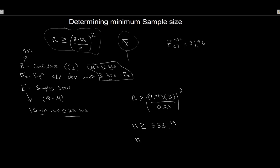So N should be greater than or equal to 554. That means if I want to cover the true population mean 19 out of 20 times and get an estimate within 15 minutes of the true population mean, I would need to sample 554 executives to get an idea of the average amount of TV they watch per week. Quite a bit, but it gives us our target sample size.